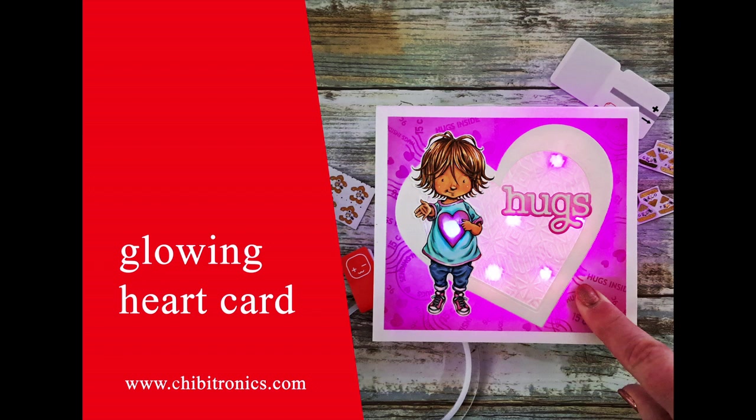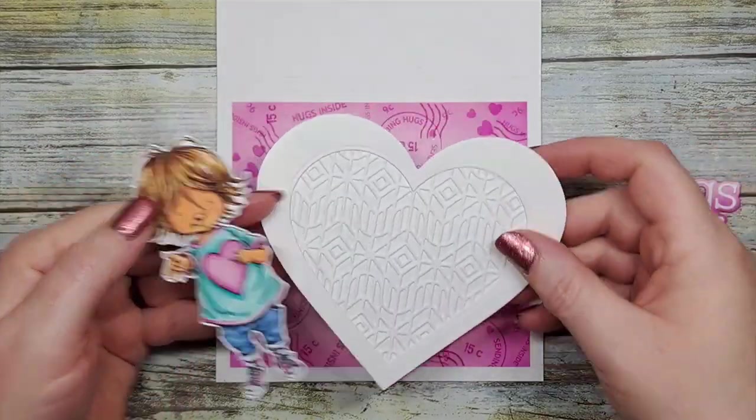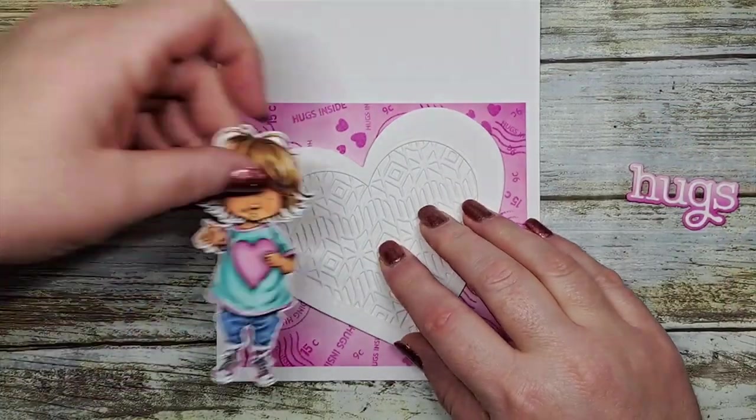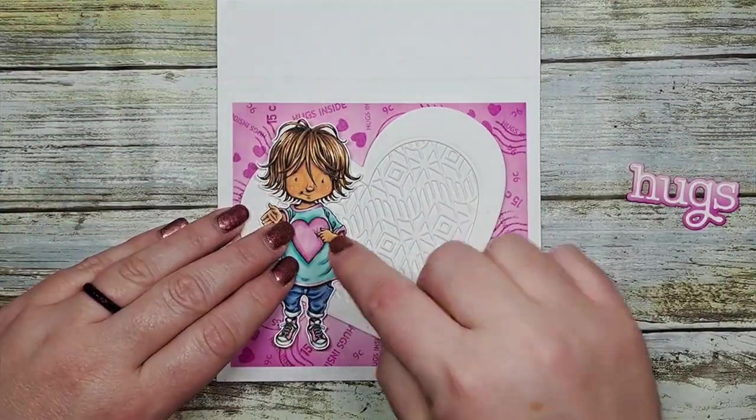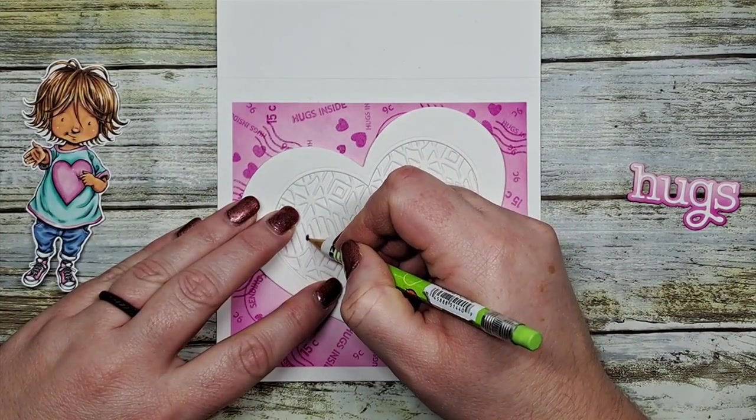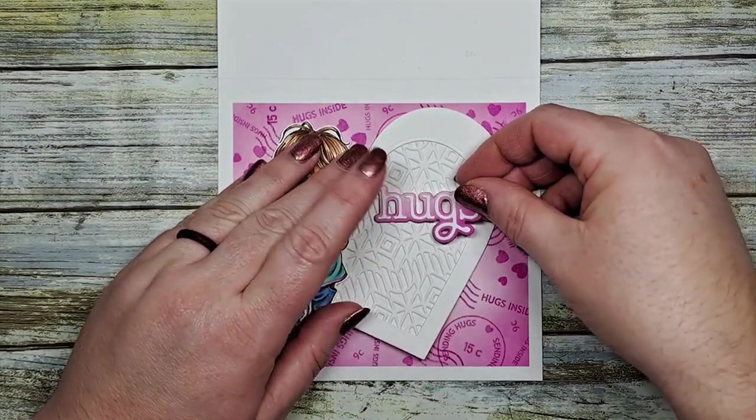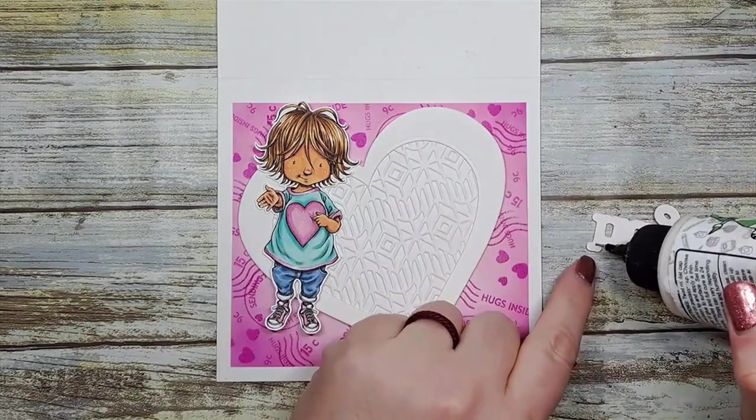We're going to start with our card base today and I've created a heart die cut along with a little girl with a heart on her shirt and a hugs die cut for our sentiment. We're going to first place a mark on our card front where our light is going to go underneath the heart on her t-shirt.